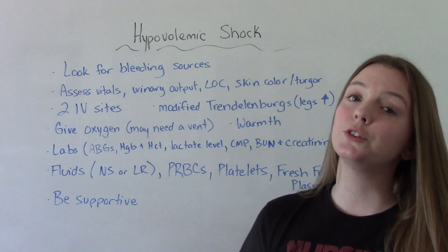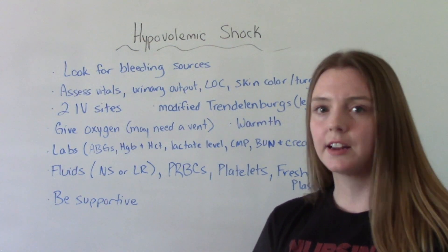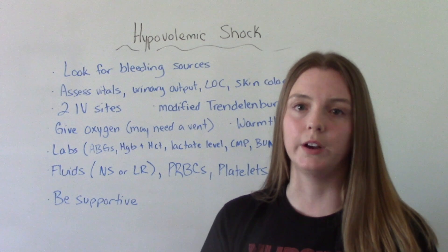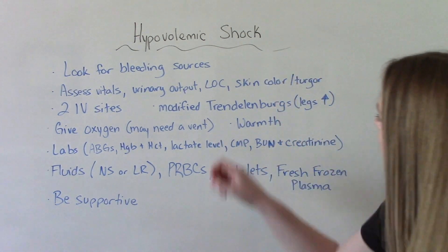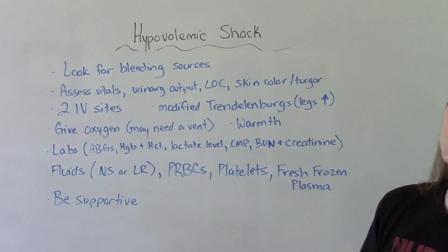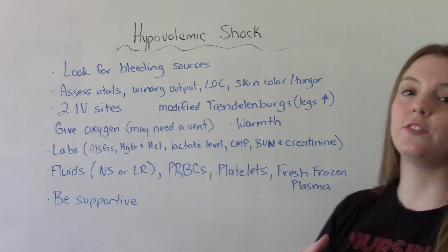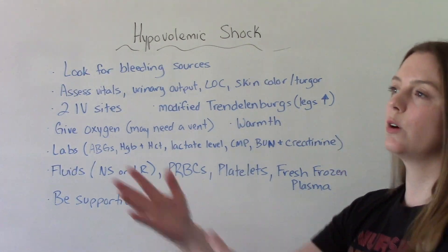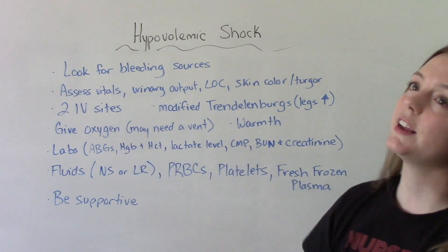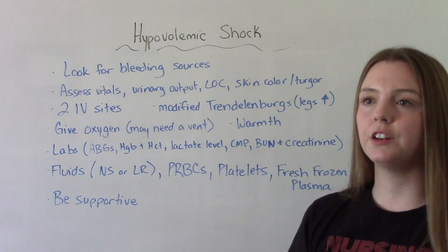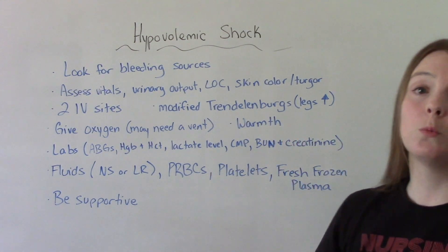These patients are going to have two IVs — one for fluid and the second as a just-in-case IV if we need to give blood along with fluid to keep that volume up. We're going to put them in modified Trendelenburg's position — flat on their back with their legs elevated — which is going to bring more blood flow to the heart. We're going to give them high levels of oxygen; they might even need to be intubated and ventilated. And we're going to keep them warm.